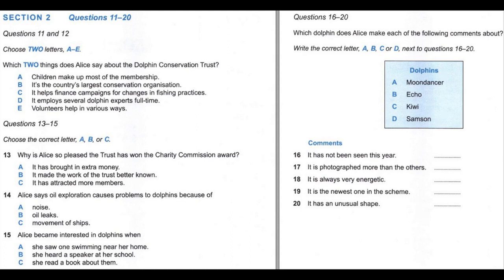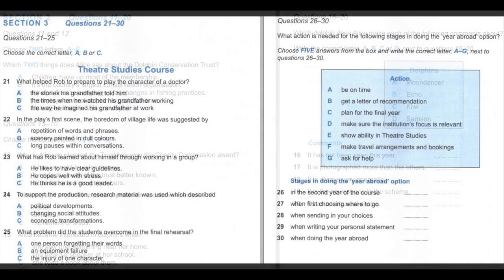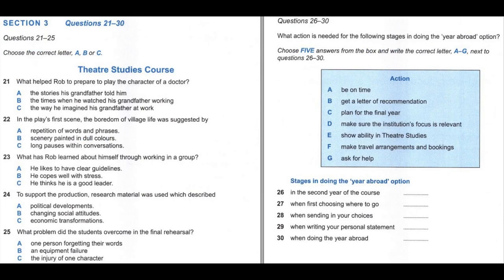Now turn to Section 3. You will hear a student called Rob, who is in the first year of a theatre studies course, talking to another student called Mia, who's in the fourth year of the same course. First, you have some time to look at questions 21 to 25. Now listen carefully and answer questions 21 to 25.